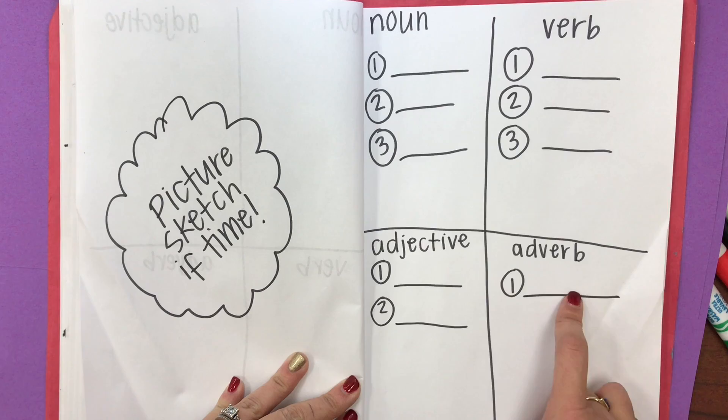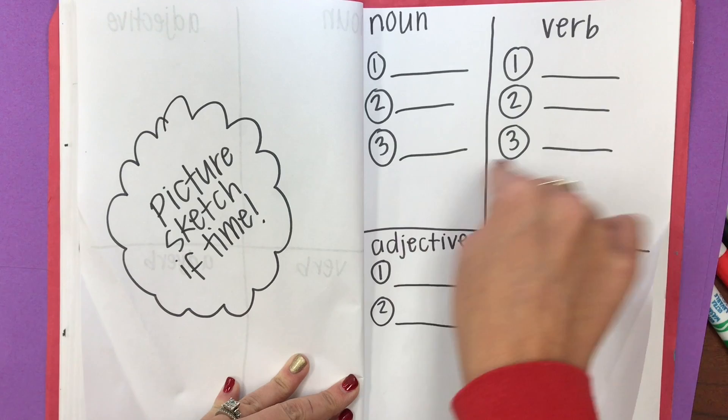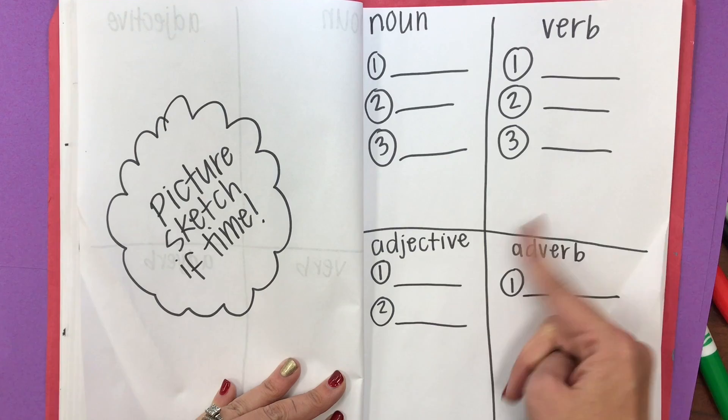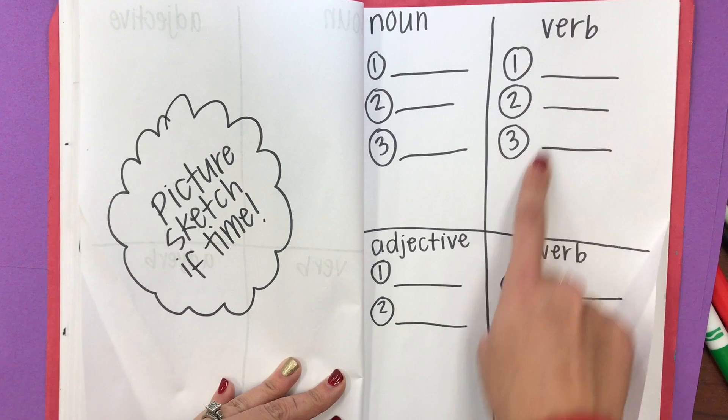Put your nouns — which is a person, place, or thing — into this category. Your verbs, which are your actions, into this category. Your adjectives — a word that describes a noun — into this one. And your adverb — a word that describes your verb — into this one. I will put that sheet up on the board before we get started.